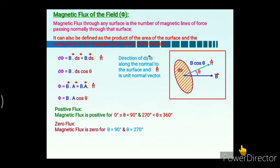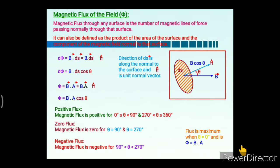Zero flux is obtained when theta is 90 degrees or 270 degrees, meaning no magnetic lines of force pass normally through the surface. Negative flux is observed when theta is between 90 degrees to 270 degrees. The flux is maximum — that is, maximum lines of force pass normally through the surface — when theta is zero degrees, and hence phi equals B·A.